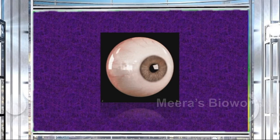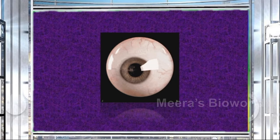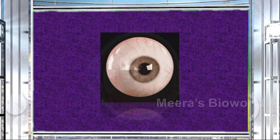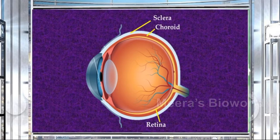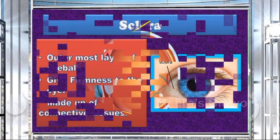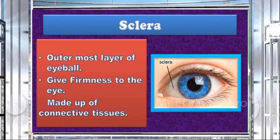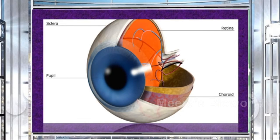Now let's see the various layers of the eye. The eye has a spherical shape and is made up of three layers: sclera, choroid, and retina. The sclera is the white outer layer which gives firmness to the eye and is made up of connective tissues. The middle layer is called the choroid, which contains a large number of blood vessels. The innermost layer is the retina, which has photoreceptors.